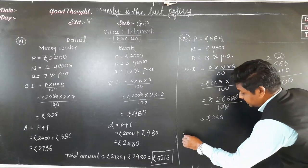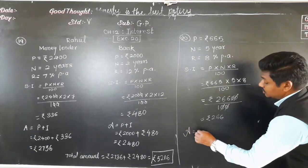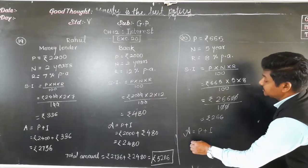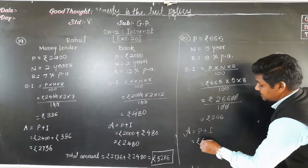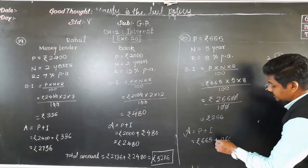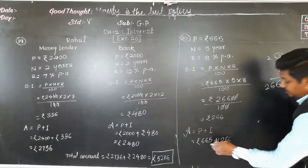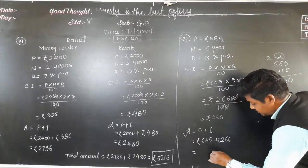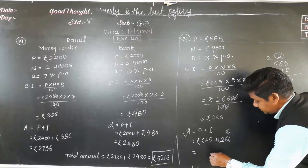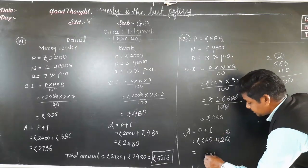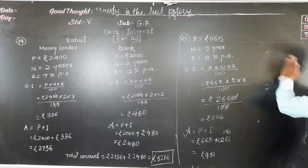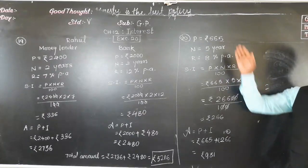Once we have the interest, we can find the amount. Amount equals principal plus interest: rupees 665 plus rupees 266. Adding: 5 plus 6 is 11, 1 comes down carry 1; 6 plus 6 is 12 plus 1 is 13, 3 comes down carry 1; 6 plus 2 is 8 plus 1 is 9. So rupees 931 is the amount to be repaid after 5 years.